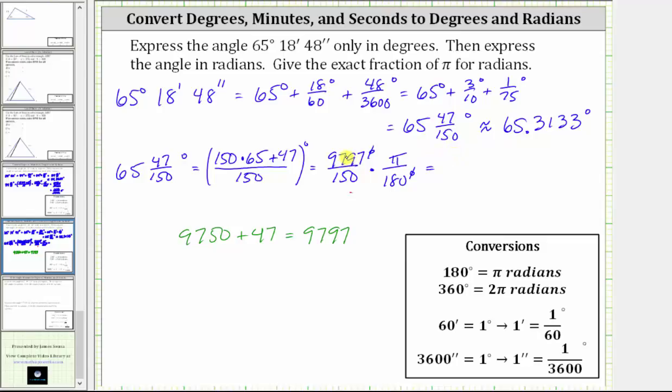In the numerator, we have 9,797 times pi. In the denominator, we have 150 times 180, which is equal to 27,000. And this fraction does not simplify, and therefore this is the exact angle expressed in radians in terms of pi. We can also express this as 9,797/27,000ths pi. Either form is acceptable. I hope you found this helpful.